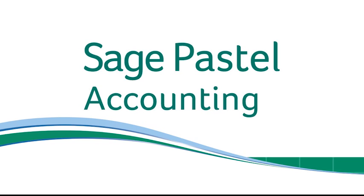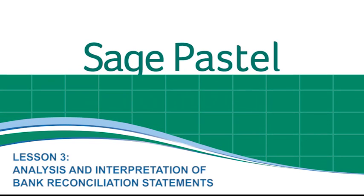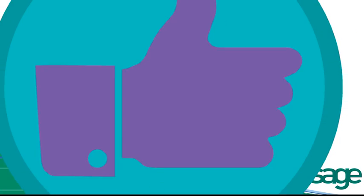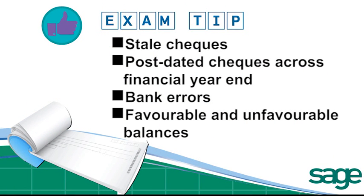Our topic in this Sage Pastel accounting lesson is the analysis and interpretation of bank reconciliation statements. In the example we're about to explore, we'll be working on questions that are very typical in exams for this section of the work. Let's begin.